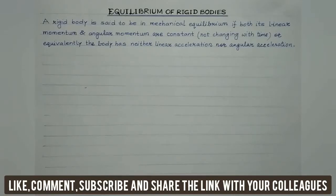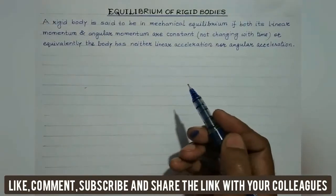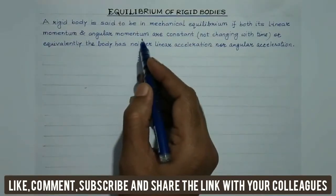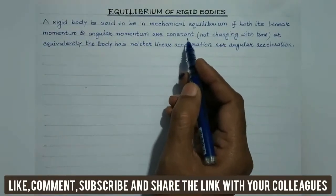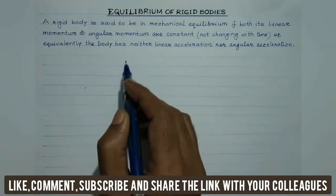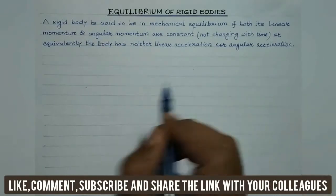Today we are going to discuss the equilibrium of rigid bodies. A rigid body is said to be in mechanical equilibrium if both its linear momentum and angular momentum are constant — that is, they do not change with time. Equivalently, the body has neither linear acceleration nor angular acceleration.